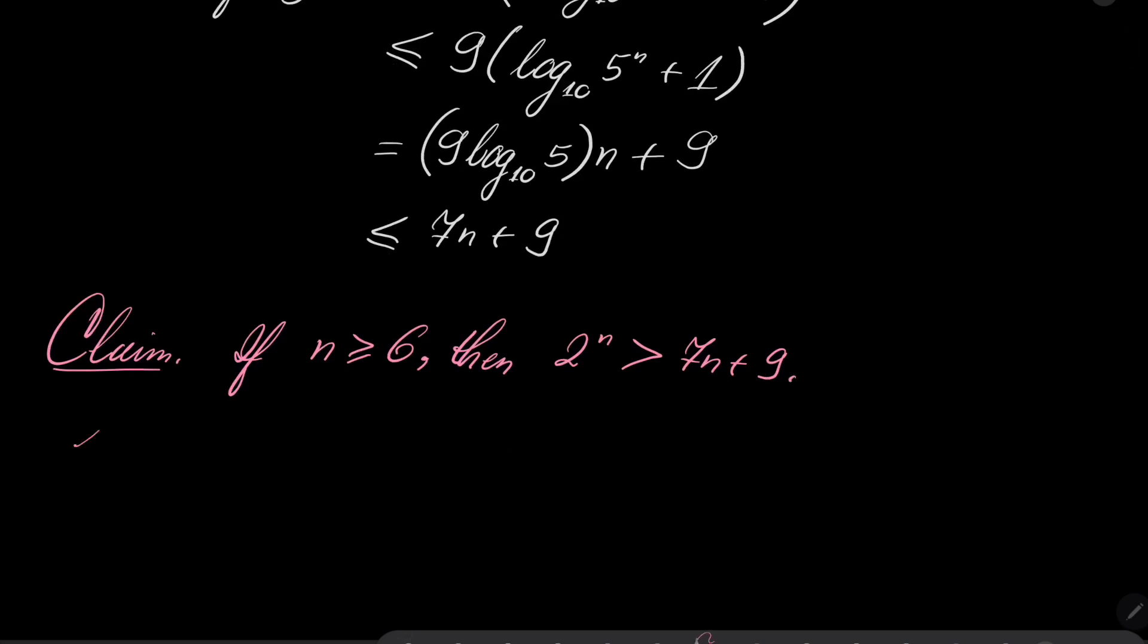Proof of my claim is by induction. If n equals 6, then 2 to the power of n is 2 to the power of 6, which is 64, while 7n plus 9 is 7 times 6 plus 9. 7 times 6 is 42, 42 plus 9 is 51. 64 is greater than 51.